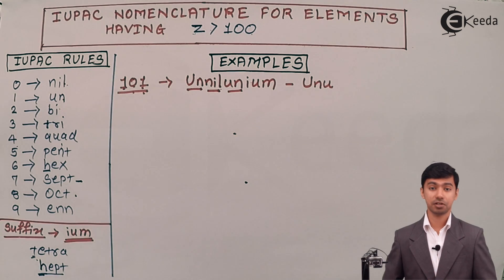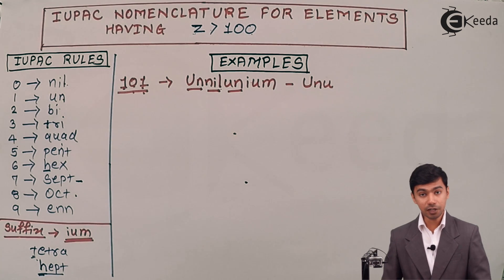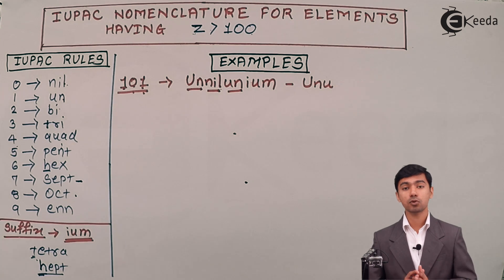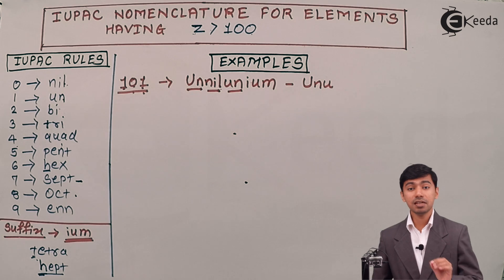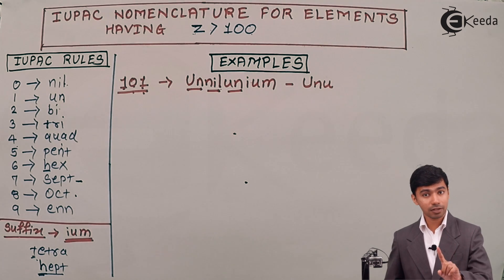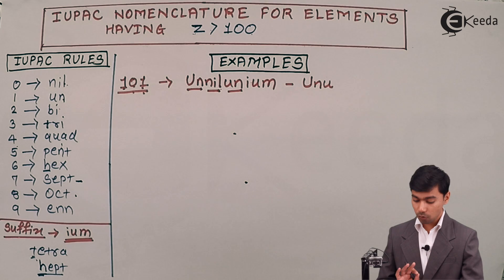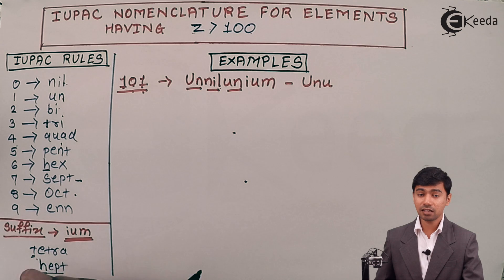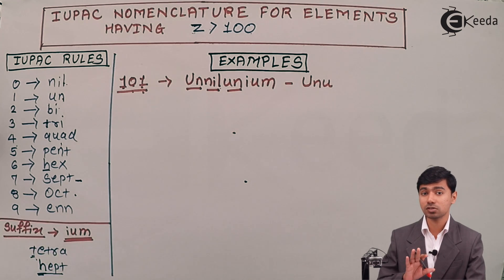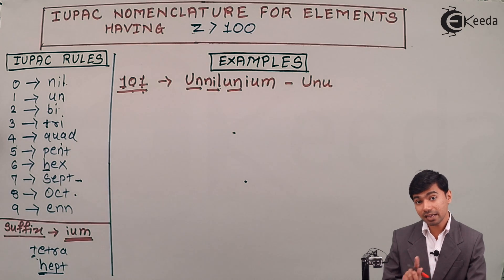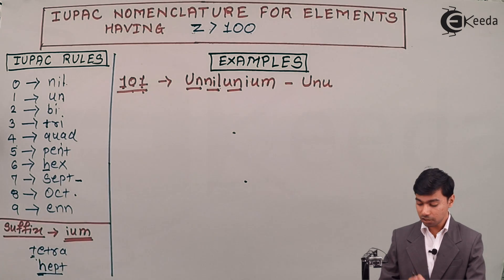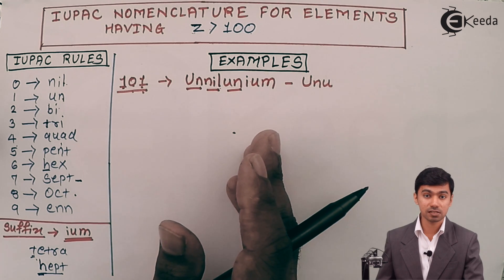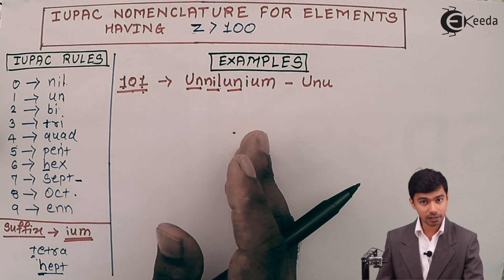These IUPAC names are temporary. Since all these elements are synthesized in the laboratory, there is a conflict among scientists about the permanent name. Until the name is officially fixed by the relevant agency or scientists, the IUPAC name is used. Once the conflict is resolved and a name is decided, that official name becomes mandatory instead of the IUPAC temporary name.